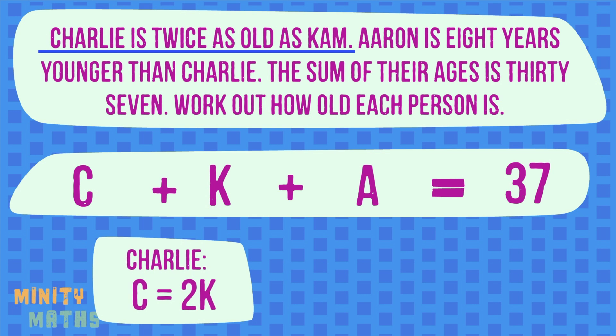For example, Charlie is twice as old as Cam — in other words, Charlie is two times as old as Cam. We can write this in algebra as: Charlie (C) equals two times Cam (K).